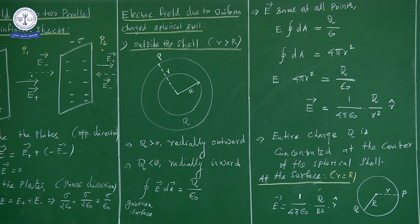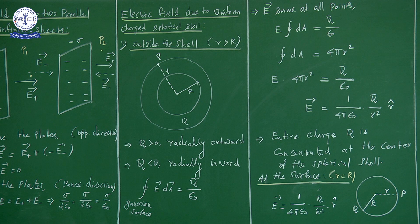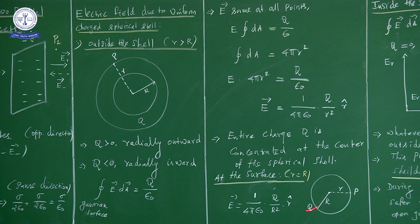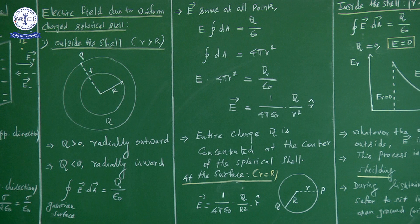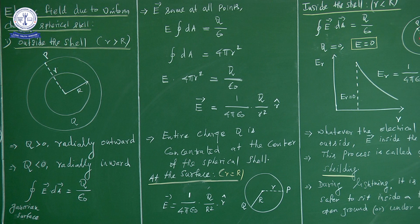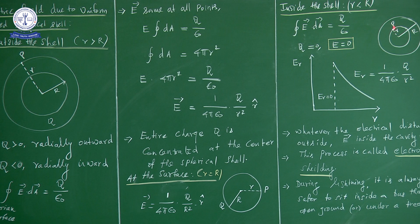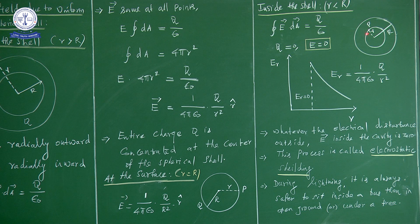Now for inside the shell, we consider a Gaussian surface inside the sphere. We consider a point inside at some distance from the center. To calculate the electric field inside, we apply Gauss's law to the Gaussian surface drawn inside the sphere.